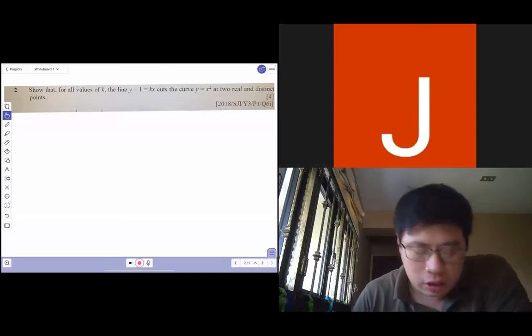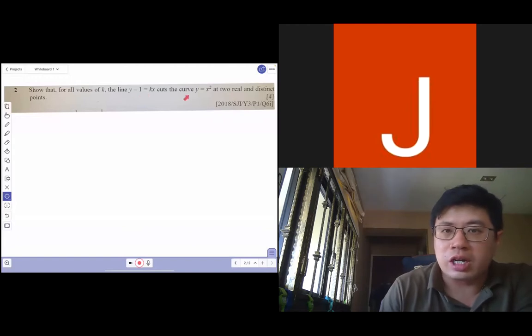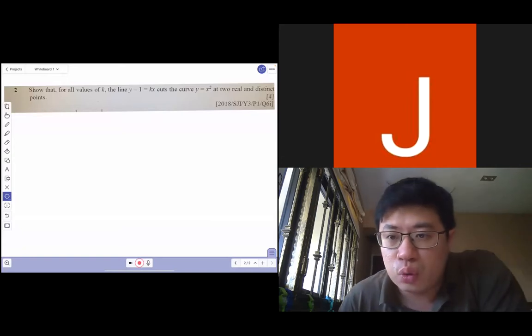Show that for all values of k, the line y equals kx cuts the curve at two real and distinct points. This is a question that involves two curves.